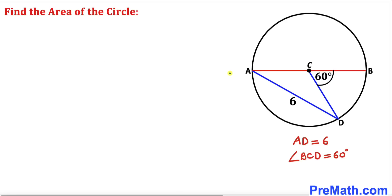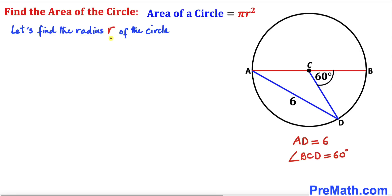Let's get started by recalling the area of a circle formula, which is pi r squared, where r is the radius of this circle. So we are going to find the radius r of this circle.